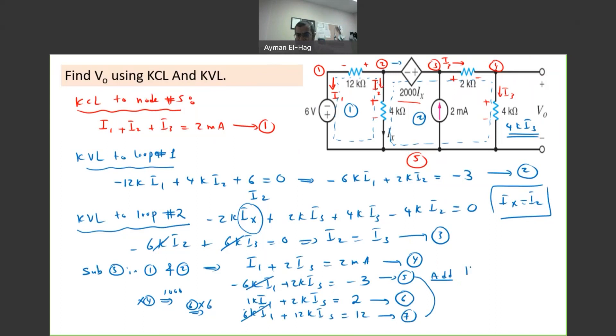We will have 14K I3 equal to 9. So your I3 equal to 9 over 14K, which is equal to 0.64 milliamp. I'm dividing by 1,000, so this is my I3.